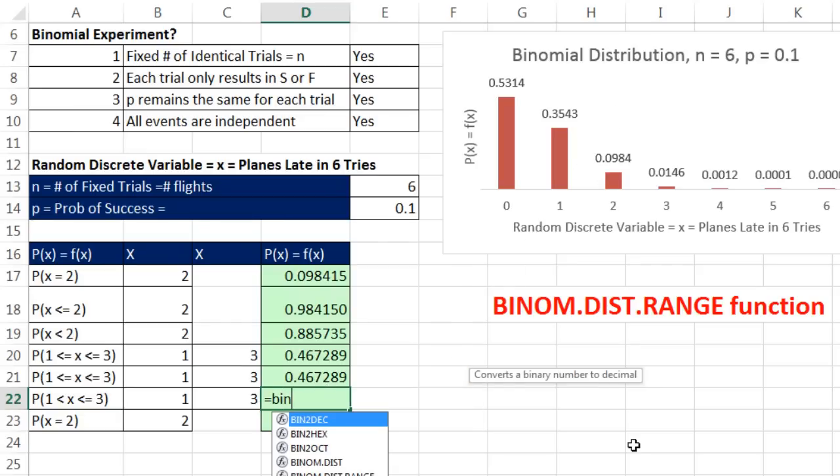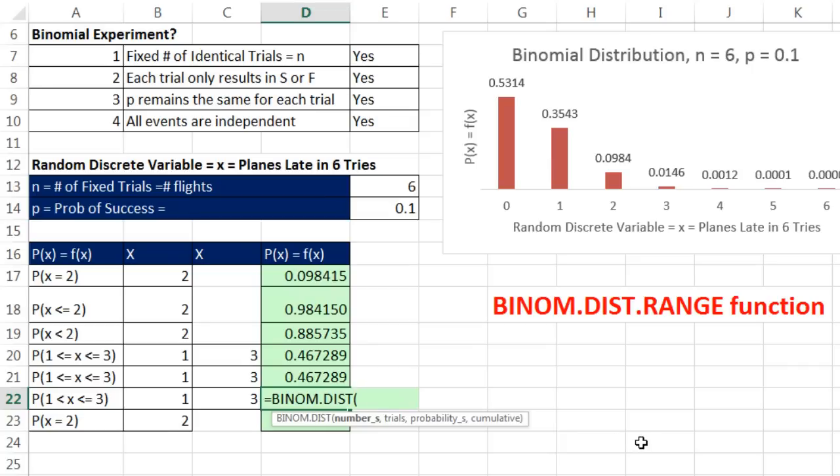Now, we do want to look at an example where we still have to be careful, like earlier. If we're asking the question, what's the probability that the number of flights are greater than one and less than or equal to three, and our input is one, we have to be careful. Trials, there are six flights in a day, comma. Probability that any one particular flight is late is 0.1, comma.